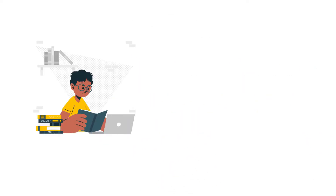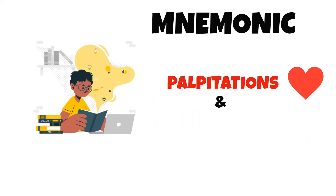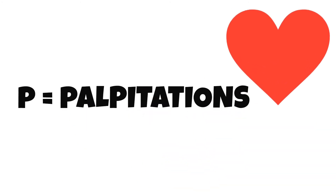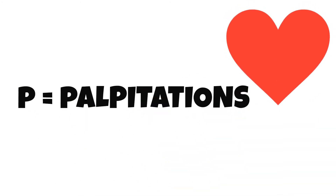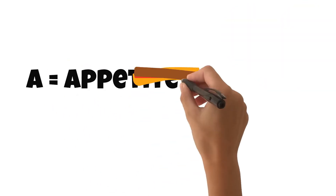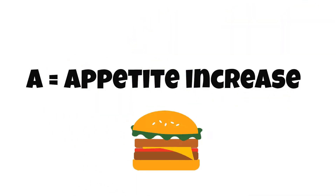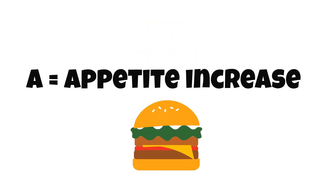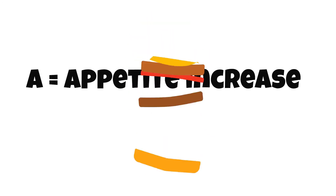The mnemonic that we will be using to remember the signs and symptoms is PALPITATIONS AND EYES. P equals palpitations, which stands for tachycardia, which ties in with atrial fibrillation. A equals appetite increase, due to the increased metabolic rate generated by the excess thyroxine levels.